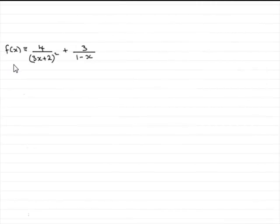Now, in this part of the question, we've got to find the series expansion for f of x. We've already got that f of x is 4 over 3x plus 2 all squared plus 3 over 1 minus x.